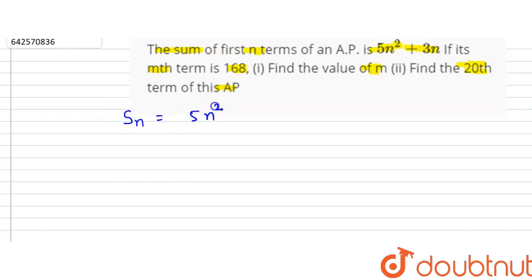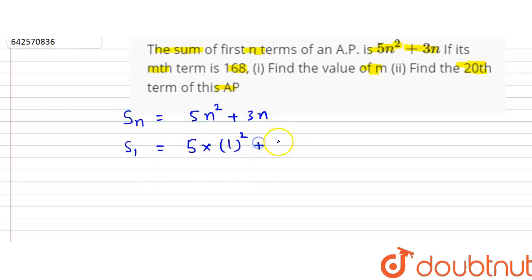We can find the value of S1: this equals 5×1² + 3×1, which equals 8. The meaning of S1 is the sum of one term, and the sum of one term means this is actually the first term of the AP. So the first term of the AP equals 8.